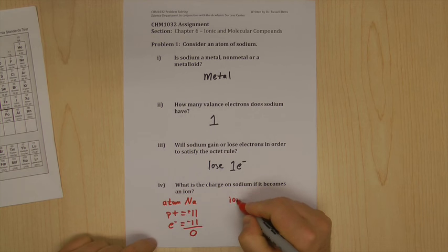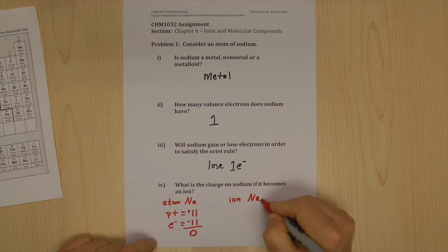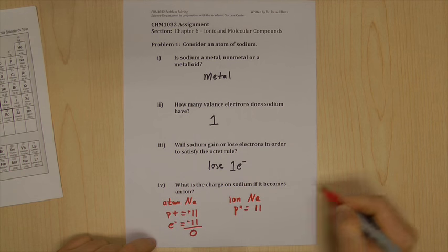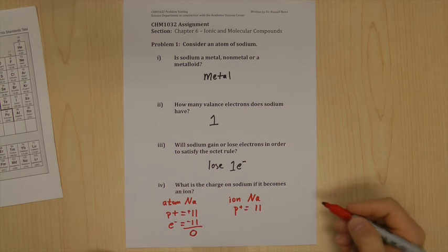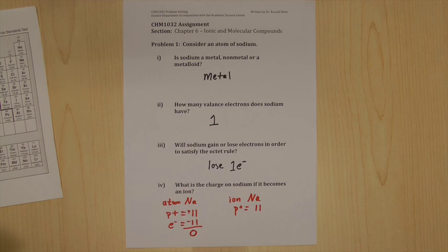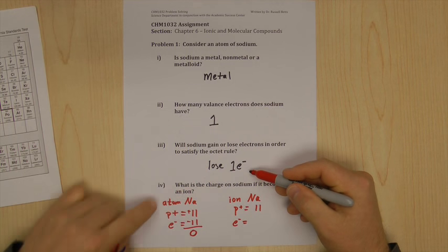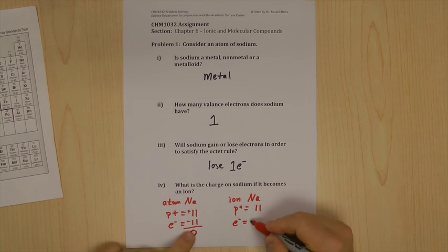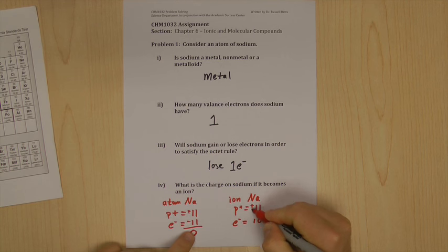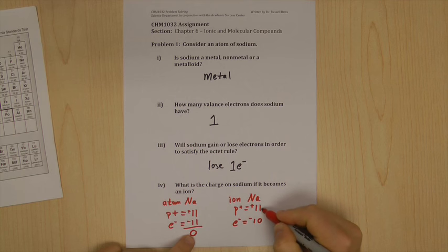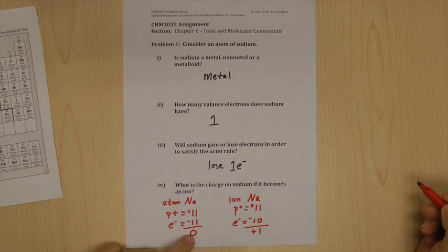But now an ion, ion of sodium, the protons are still 11. The protons won't change. If you change the proton, you change the atom or the ion. So the protons remain the same. But now if we lose an electron, we go from having 11 to having 10. 11 positives, 10 negatives, the overall charge here will be plus one or positive one.